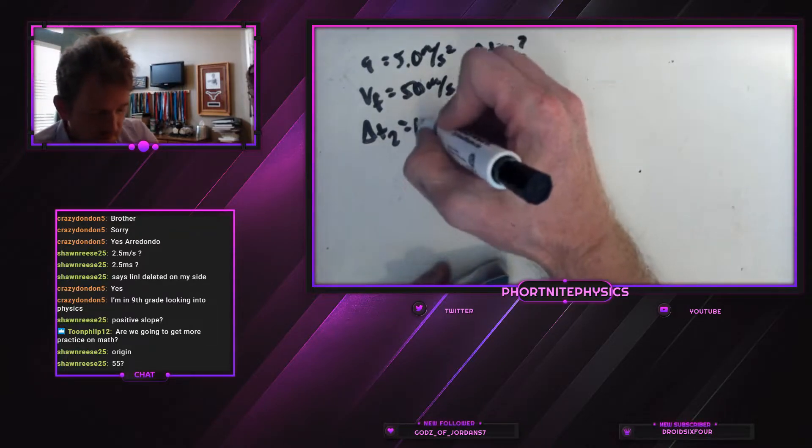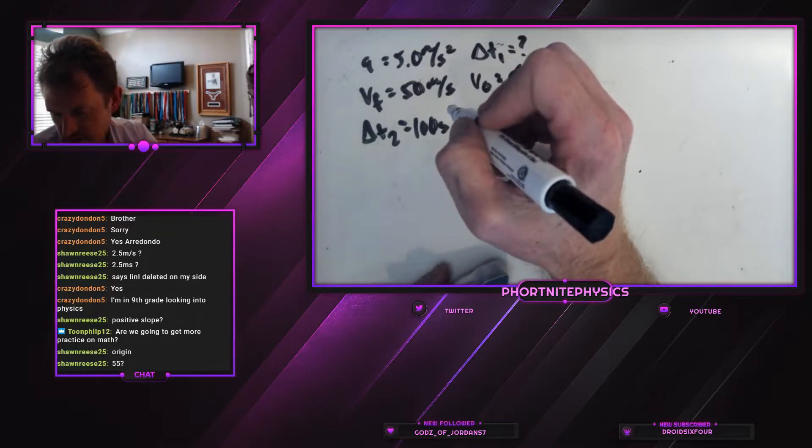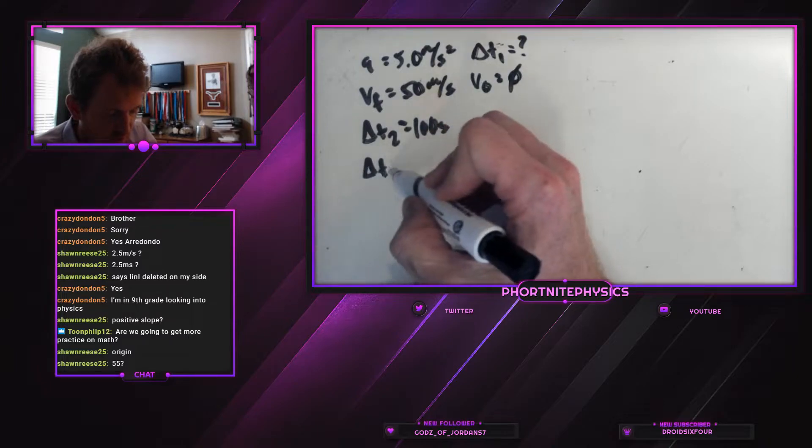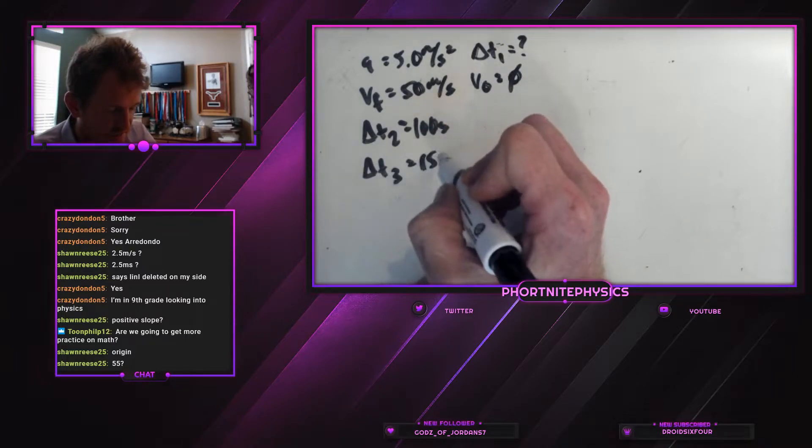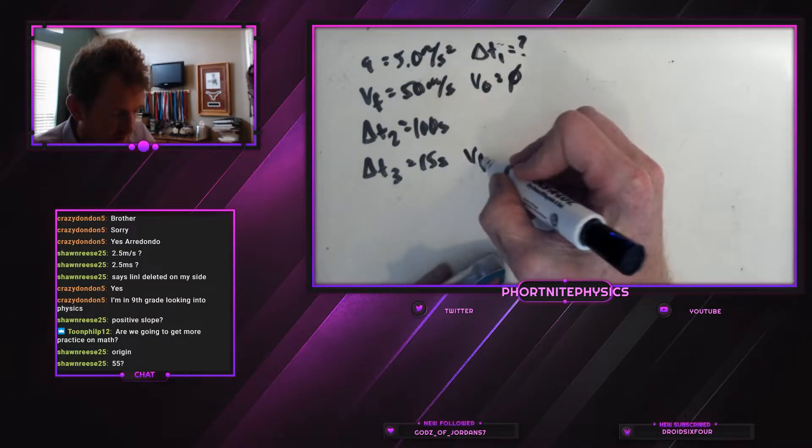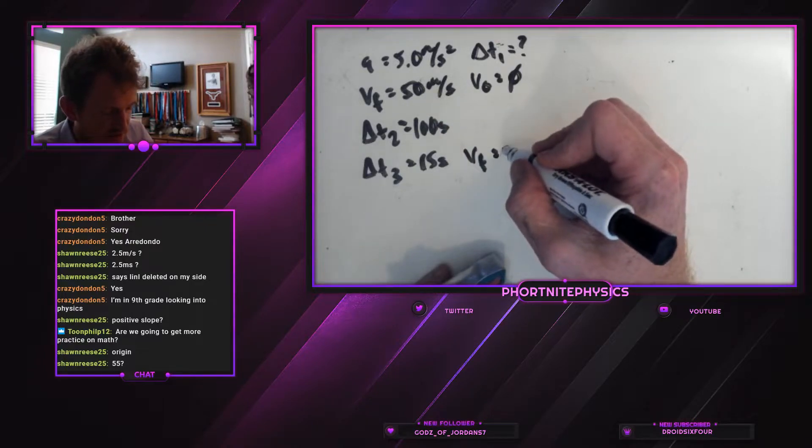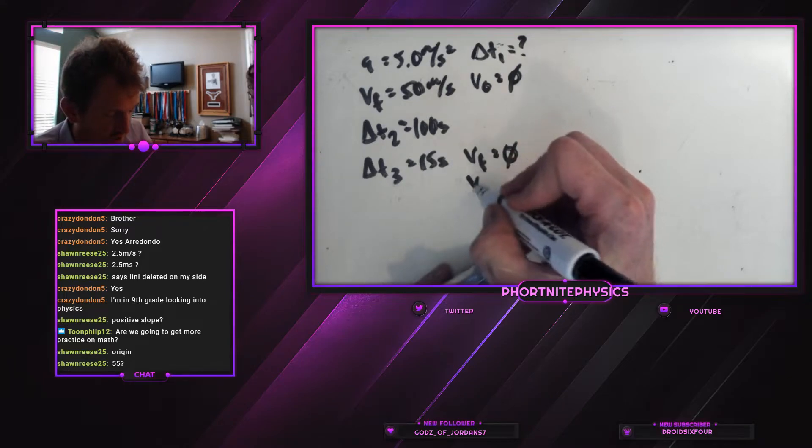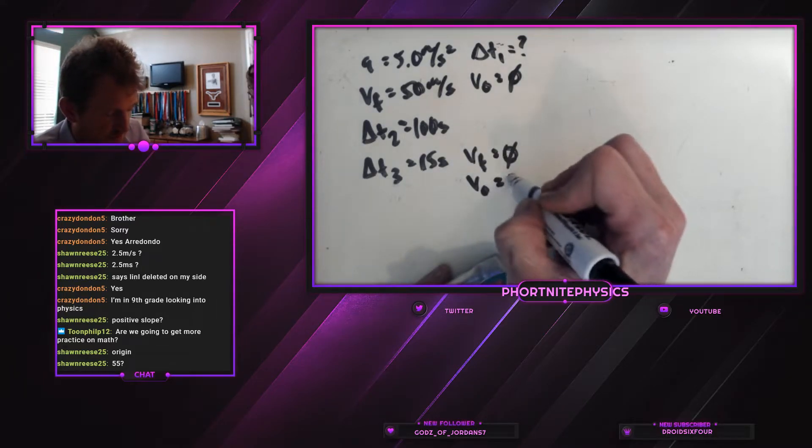100 seconds at a constant velocity until the brakes are applied stopping the truck in a uniform manner an additional 15 seconds. So our third time is 15 seconds, and our final velocity in that section is zero. But our initial velocity is the 50 from the first part.